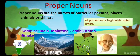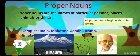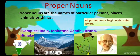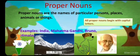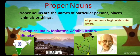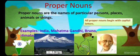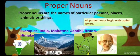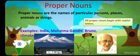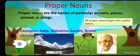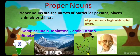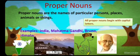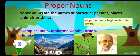Proper nouns are the names of a particular person, place, animal, and things. See the examples: India, Mahatma Gandhi, Bruno, Himalaya — all these are proper nouns. And all proper nouns begin with capital letters.